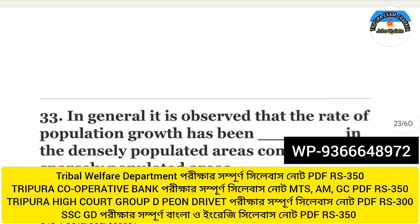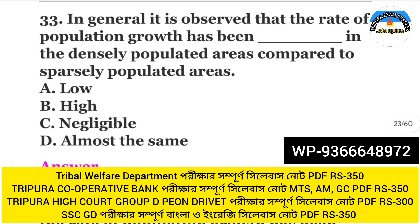The next question is number 33, on the screen. In general, it is observed that the rate of population growth has been lower in densely populated areas compared to sparsely populated areas. The answer is Option A: Law.